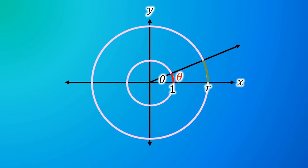What about this circle that has a radius of r? The part marked in green would have a length of r·theta units. And so if we had dθ instead of theta, that length marked in green would be r·dθ units.